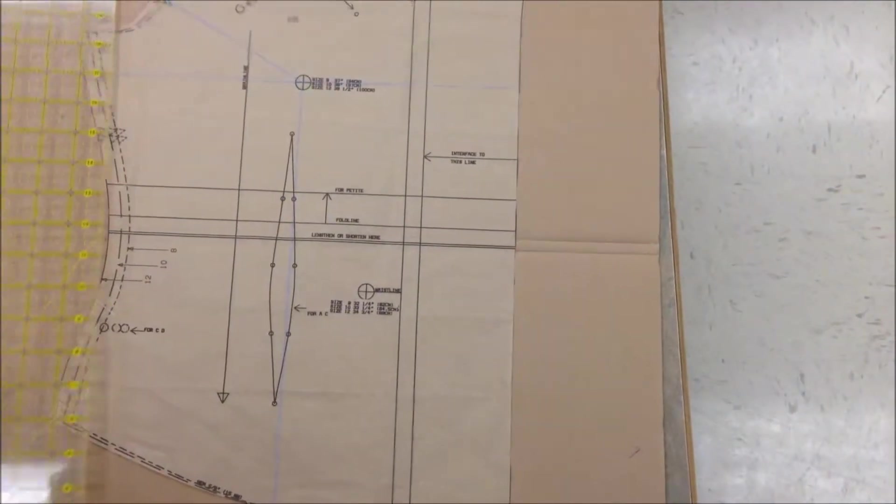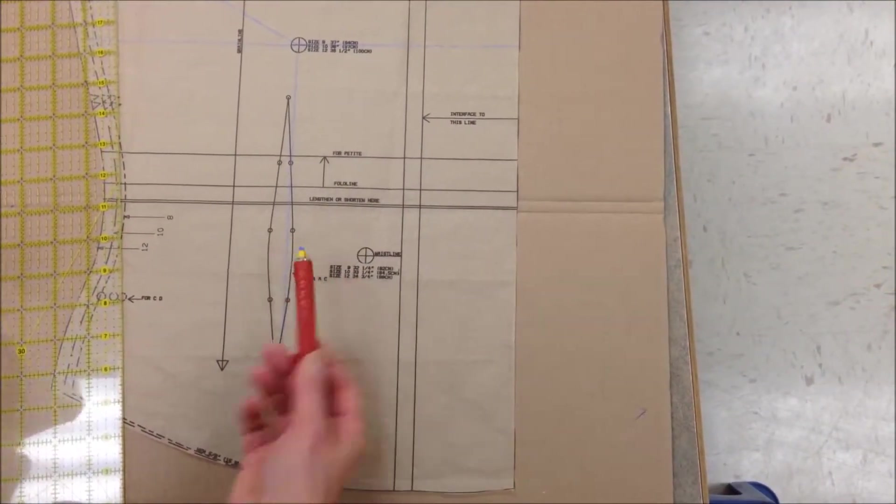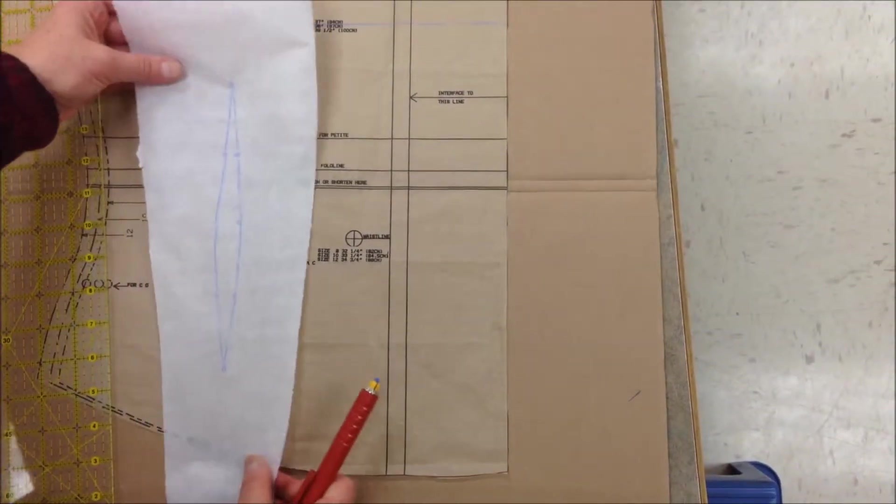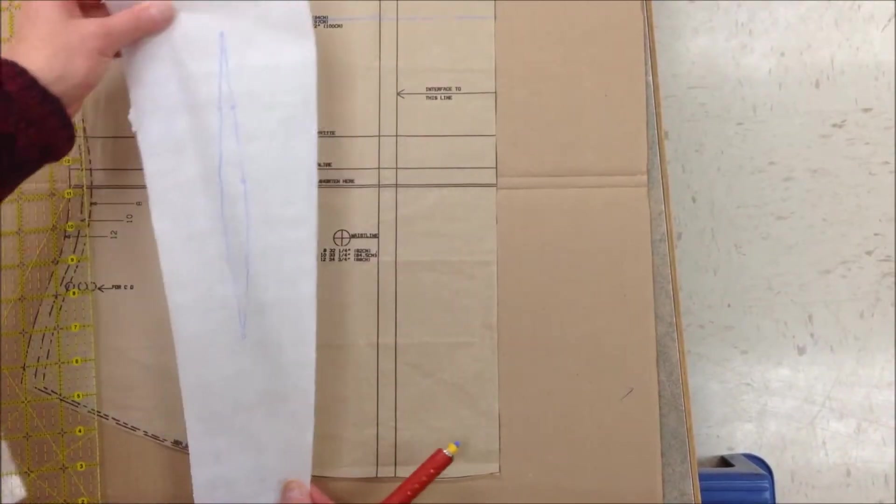Now because we are going to distort our fitted dart here, our vertical dart, I've gone ahead and just traced it here so that I can come back to this to put it back on.